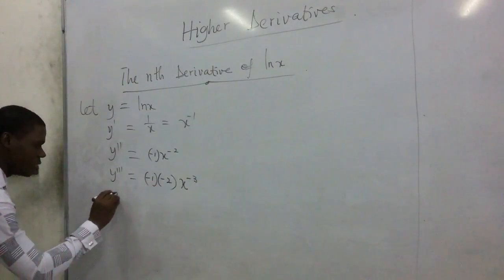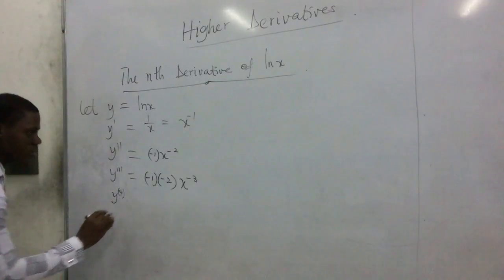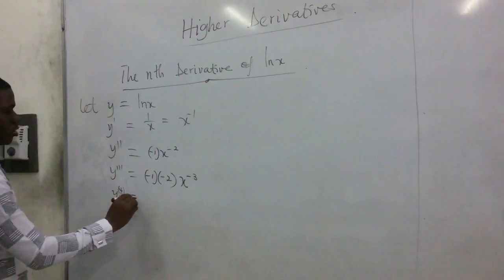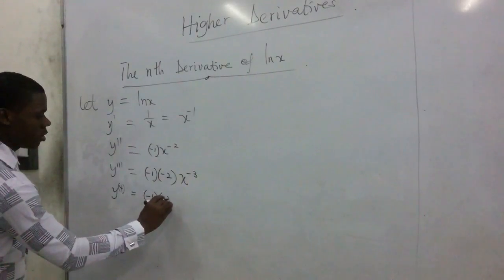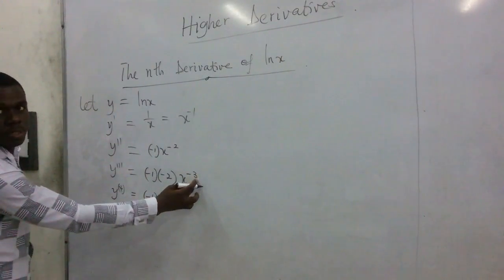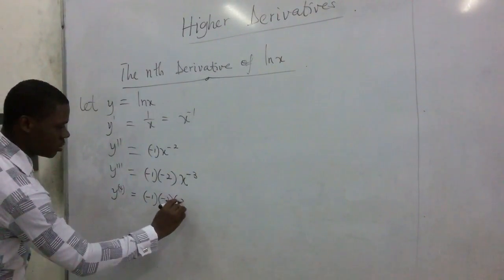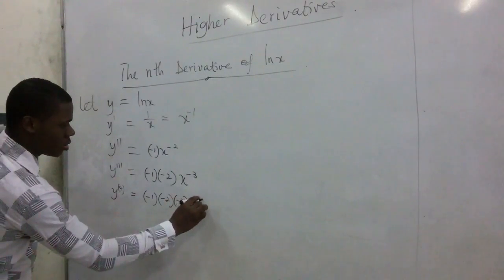But then fourth derivative, okay, so fourth derivative is going to give us negative 1 here, multiply by negative 2, and then this one comes in. So it gives us negative 3 times x^(-4).